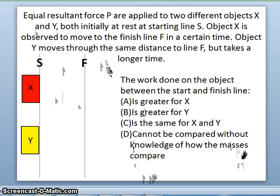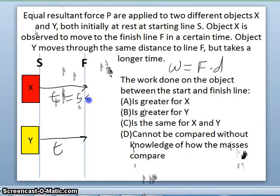We're told that both boxes move from point S to point F, but that box x does so faster than box y. If we look at our work equation, work is equal to force times distance. There's no mention of time in this equation. Because there's no mention of time, that means it doesn't matter how long they take. For example, this guy could have taken five seconds to get there, and this guy could have taken ten years. It doesn't matter that one took longer than the other.